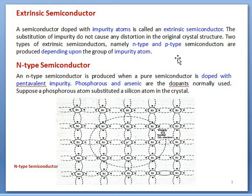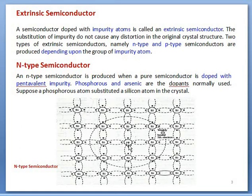In N-type semiconductor, when a pentavalent impurity is doped — when silicon atoms are replaced by pentavalent atoms — then the solid is transformed into an N-type semiconductor. When a single silicon atom is replaced by a phosphorus atom, phosphorus is pentavalent, meaning there are 5 electrons in the valence shell. Similarly, arsenic is also pentavalent. So among those 5 electrons, 4 will take part in the formation of covalent bonds with surrounding silicon atoms in the solid.